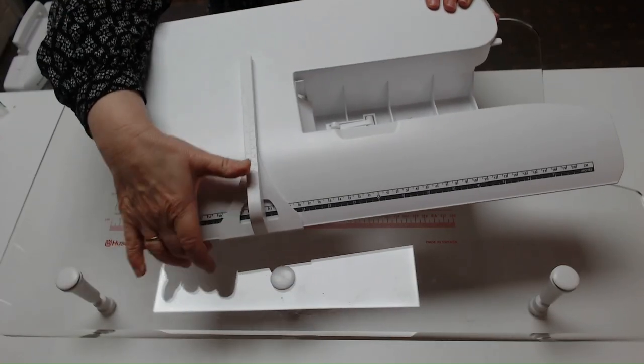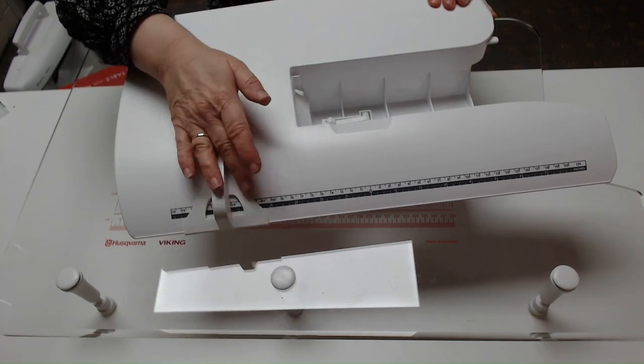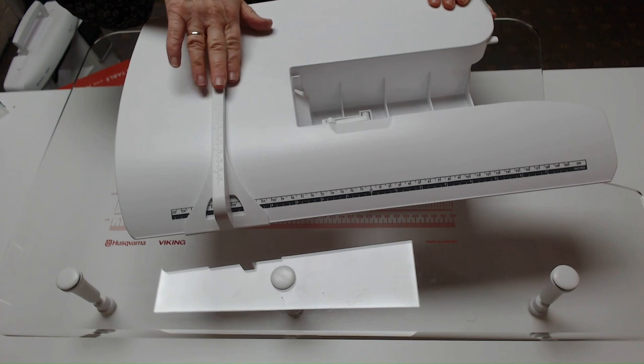You've got this guide that moves across, so you can position it where you want it. You can place your fabric on the edge so it acts like a seam guide on the side of the table.